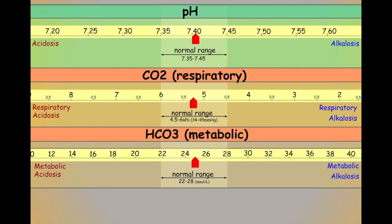A compensation occurs when one element tries to compensate for a derangement in the other element. For example, the respiratory component may try to compensate for a derangement in the metabolic component.